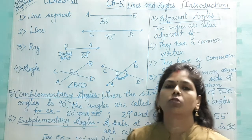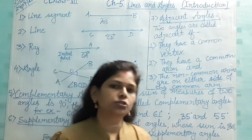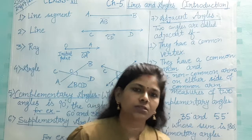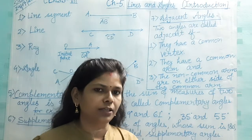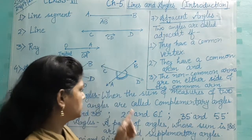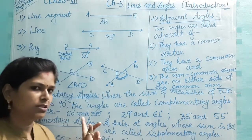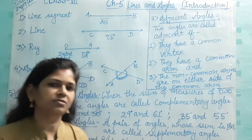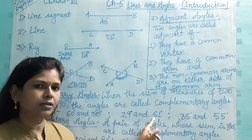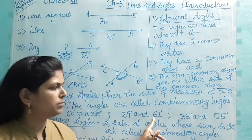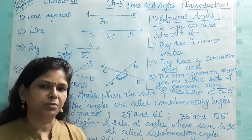Now, complementary angles. When the sum of the measures of two angles is 90 degrees, then they are complementary angles. For example, 60° and 30° — their sum is 90°, therefore they are complementary angles. Similarly, 29° and 61° — their sum is also 90°, so they are complementary. And also 35° and 55° are complementary angles.